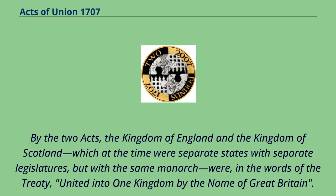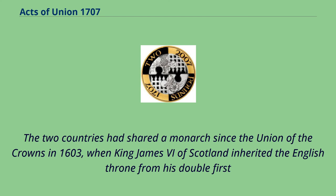By the two Acts, the Kingdom of England and the Kingdom of Scotland, which at the time were separate states with separate legislatures but with the same monarch, were, in the words of the treaty, united into one kingdom by the name of Great Britain.